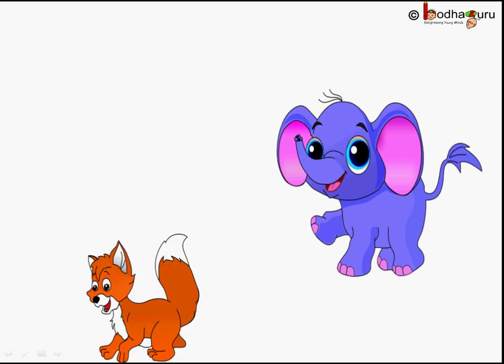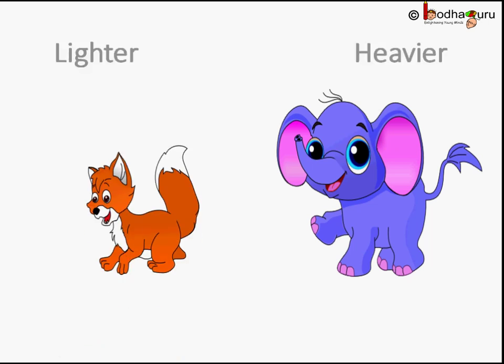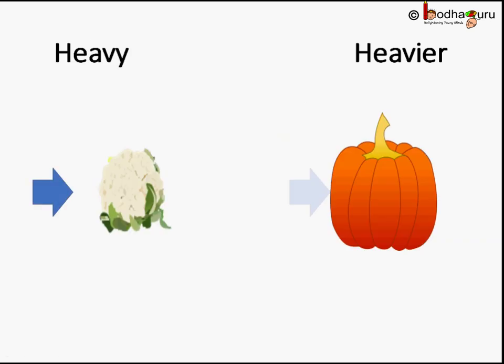An elephant is heavier than a fox or we can also say that a fox is lighter than an elephant. This cauliflower is heavy but this pumpkin is heavier.